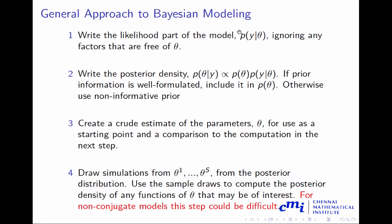Second, you write down your posterior, which is proportional to the prior times the data model, the likelihood model. If you have some well-formulated prior, then you use that prior. Otherwise, you can use a non-informative prior. Then you can use a crude estimate method.